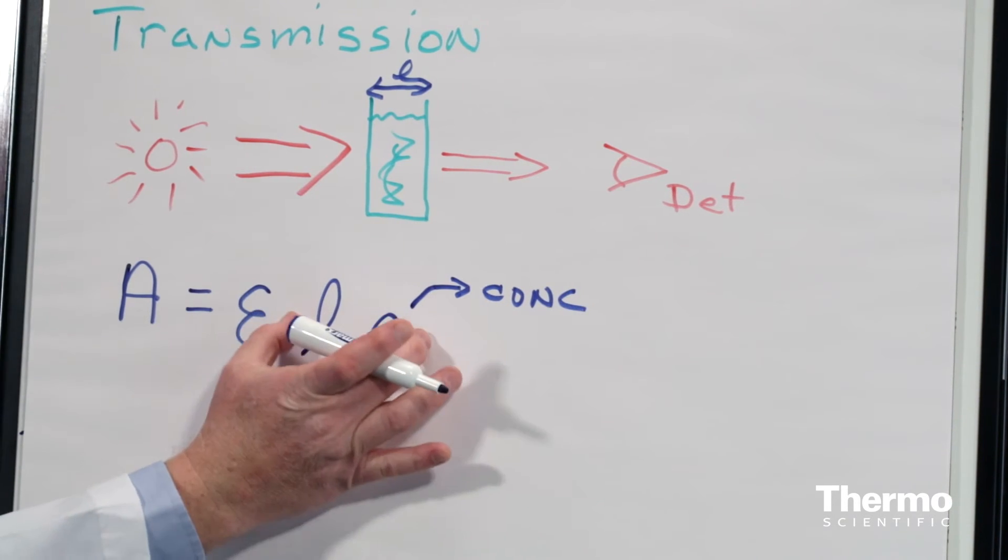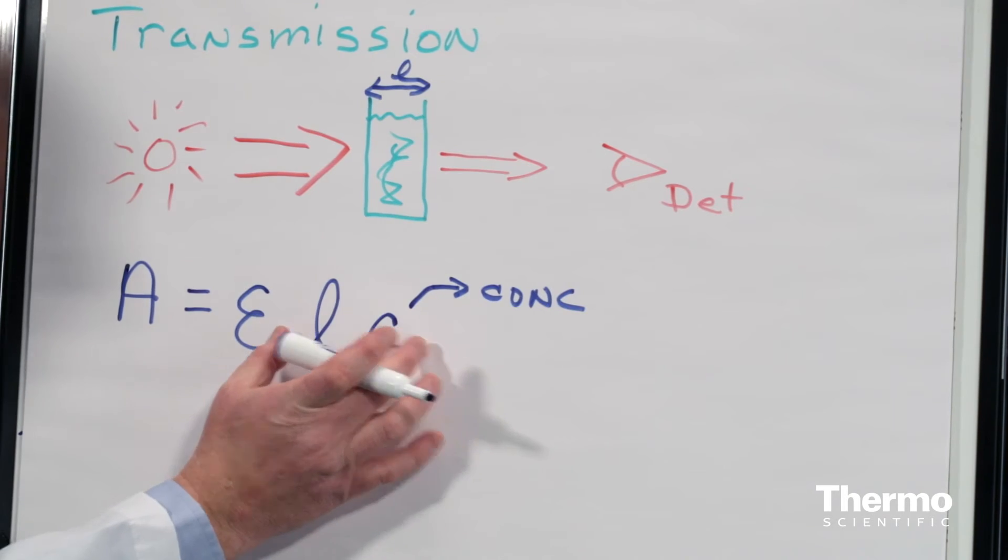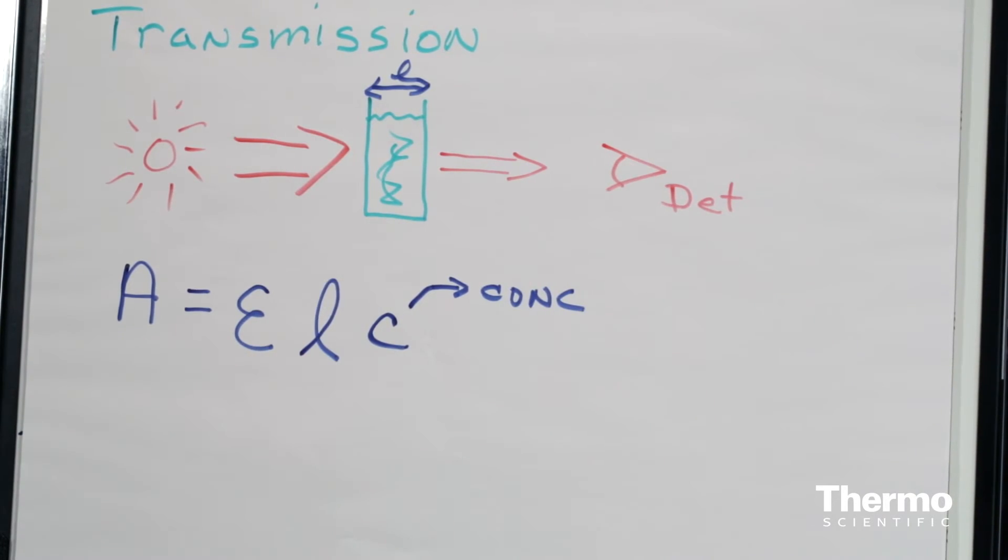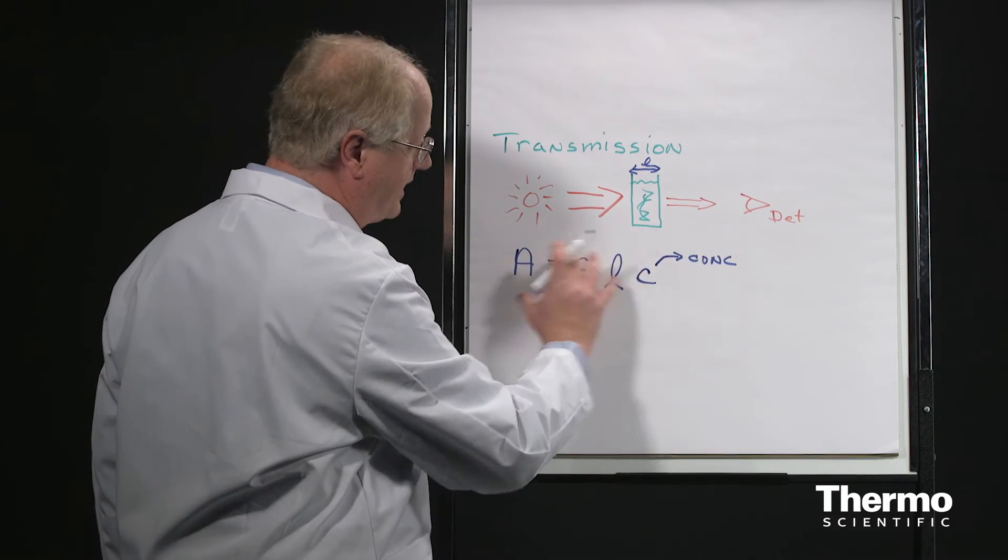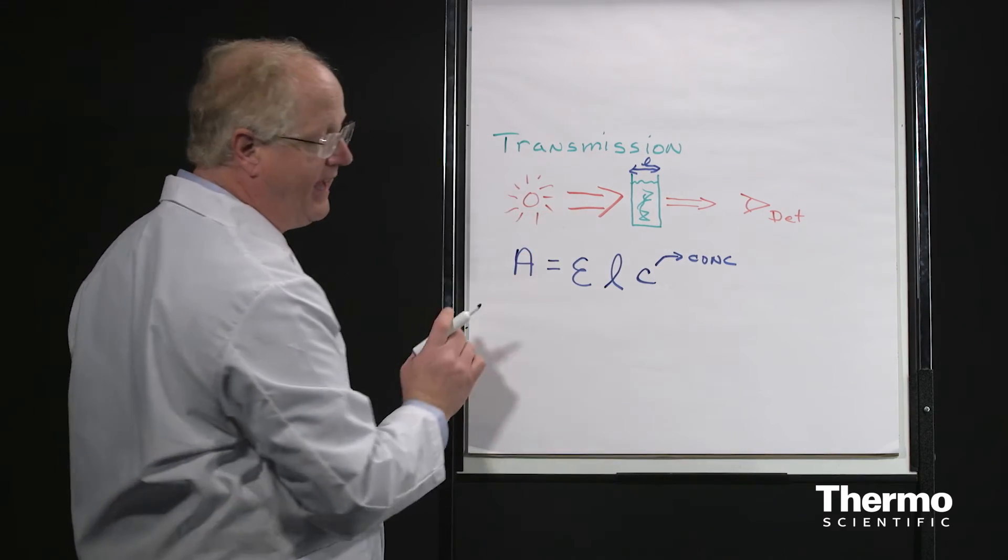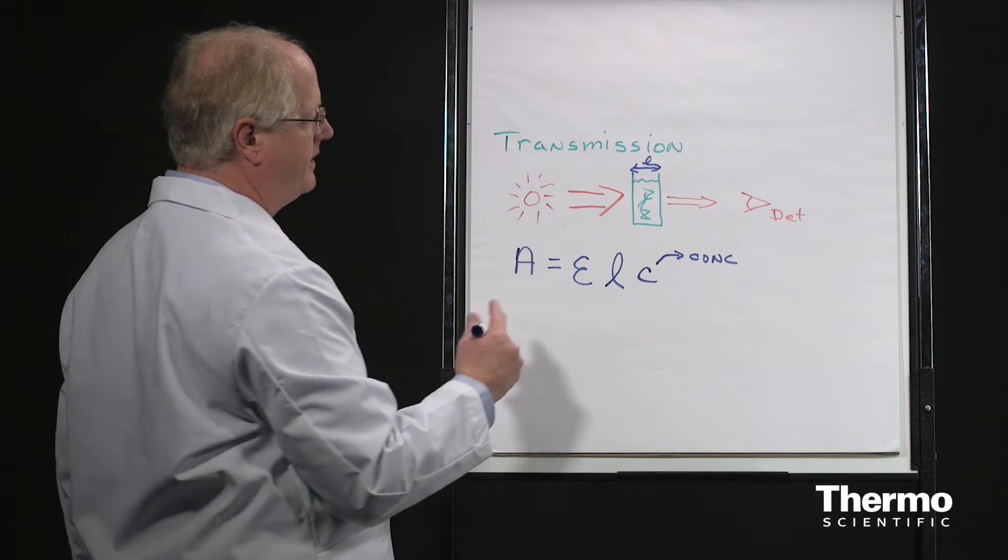When you look at LC, this is telling you how many molecules are in the infrared beam—the total number, total concentration, and total length. That's telling me something about the number of molecules. Then epsilon gives me the absorption of those molecules. When I look at this, I get the overall A or absorption spectrum of that sample.